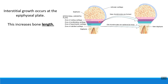As that cartilage tissue continues to grow and expand, we essentially push down the length of the bone, creating new bone tissue as we grow. So when you see the words interstitial growth, it means we're pushing our bones longer using that epiphyseal plate.